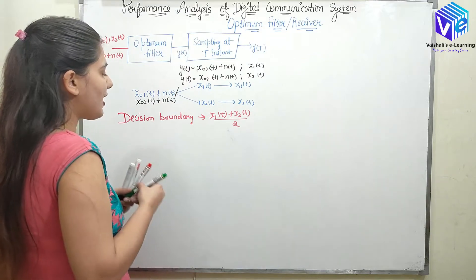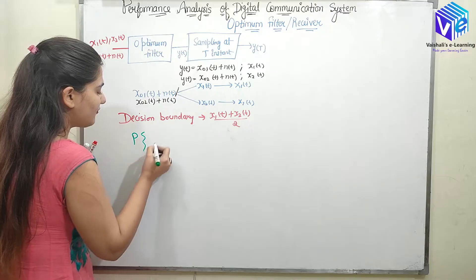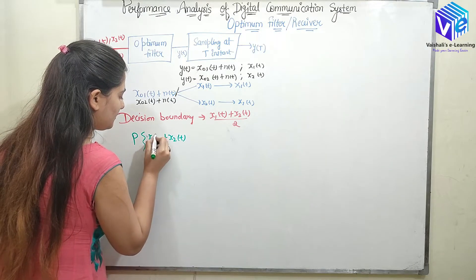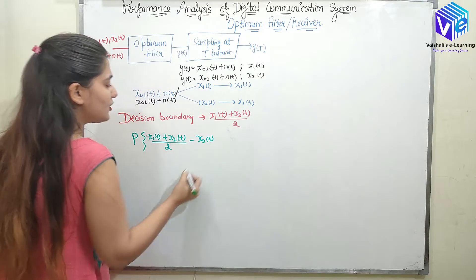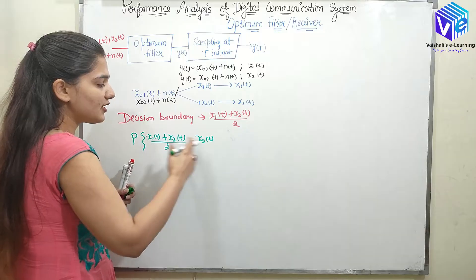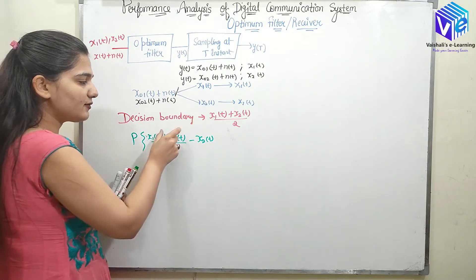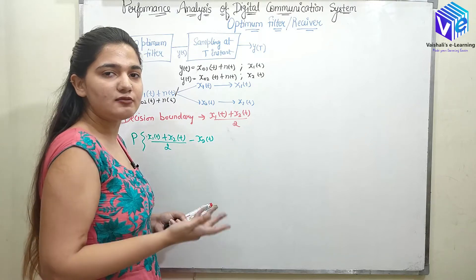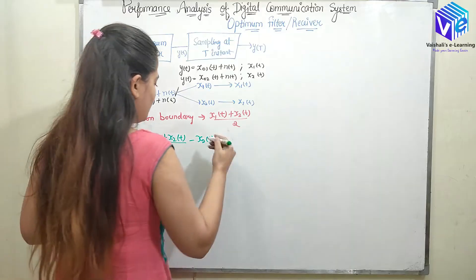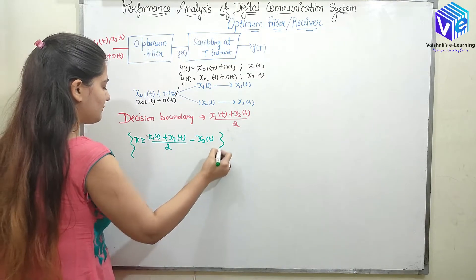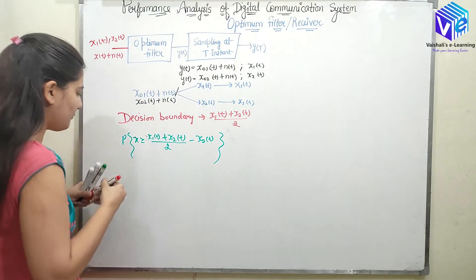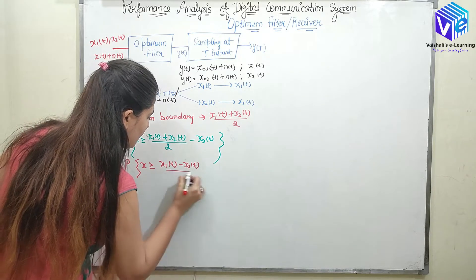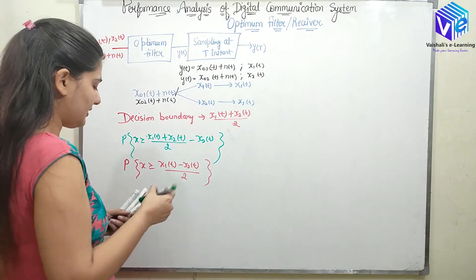So now, to find if there is an error: the probability of error involves the midpoint (X1(T) + X2(T)) / 2 minus X2(T). If X1 was sent but the received value is now closer to X2, that is an error — it will say X2 was sent but actually X1 was sent. So the error occurs when X exceeds the decision boundary (X1(T) minus X2(T)) / 2, and I need to find the probability that X is greater than or equal to (X1(T) minus X2(T)) / 2.